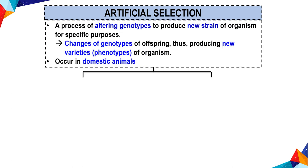Artificial selection is a process of altering genotype to produce new strains of organisms for specific purposes. Changes in the genotype of offspring produce new varieties of phenotype of organisms, occurring in domestic animals.